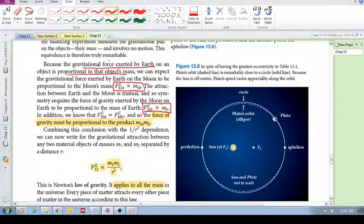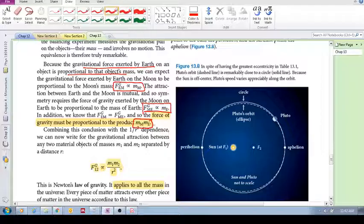So gravitational force is proportional to the mass. Now, the interesting thing here is we know that these two forces are equal. We know that the magnitude of these two forces is equal. So the gravitational force must be proportional to the product of their masses.